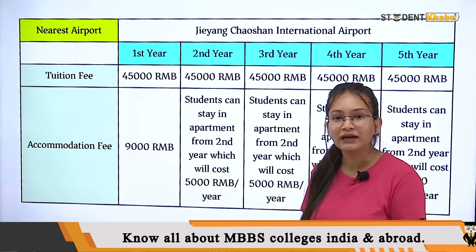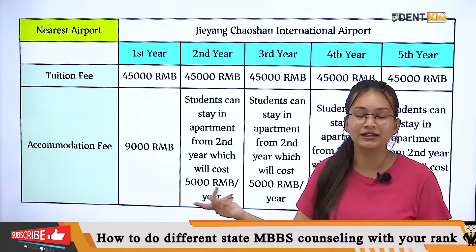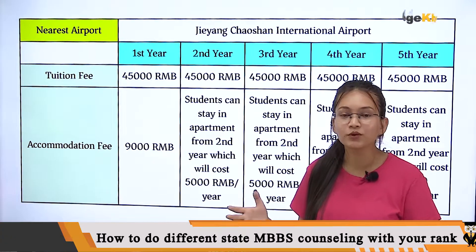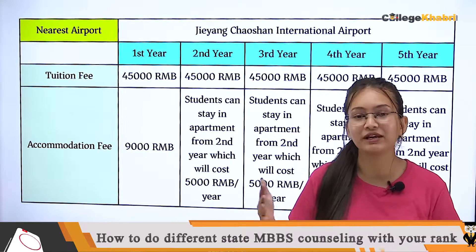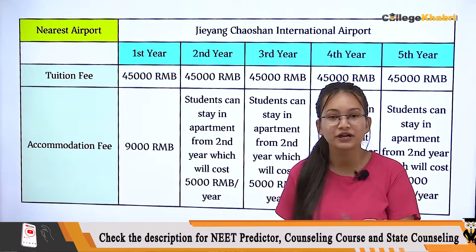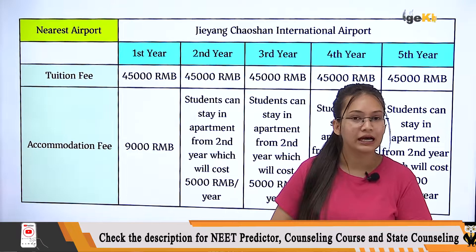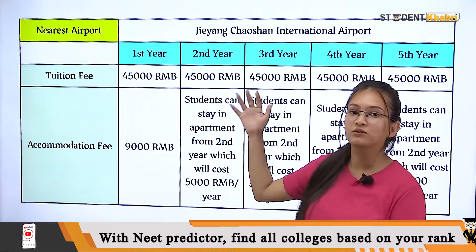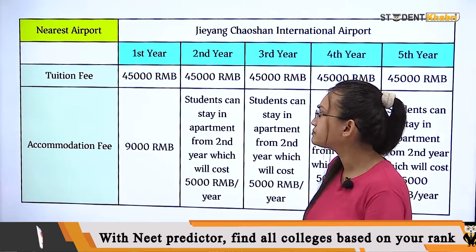So 1 RMB equals how much in Indian currency? If you don't know, I will let you know — it's 11.99 rupees. So rounding off, 12 rupees equals 1 RMB.